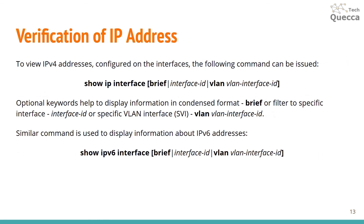Verification of IP addresses: to view the IP address configured on an interface, use: show ip interface, with several filtering options such as brief, interface ID, or VLAN interface ID. A similar command is used to display IPv6 address information, with the small difference of using ipv6 in the command: show ipv6 interface.